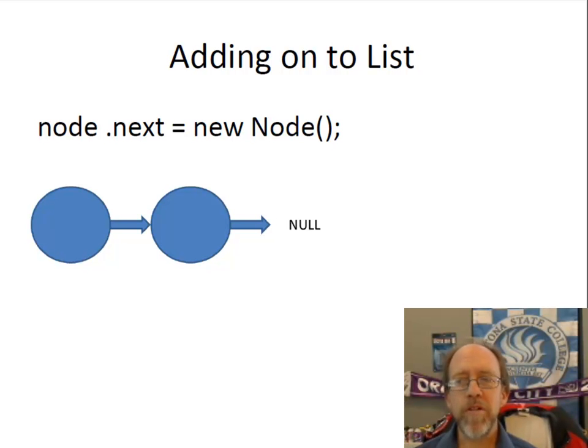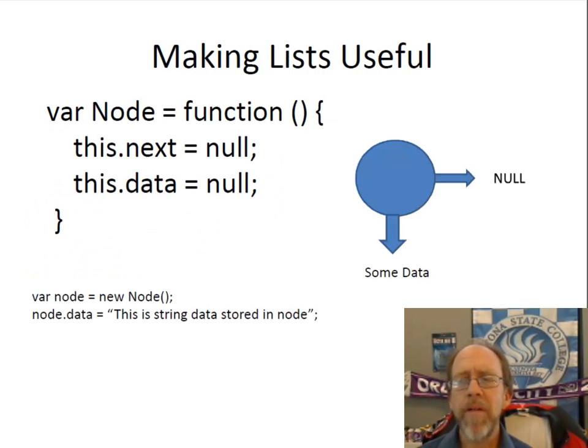Now this concept of the node is simple in that the head is the first element of the node, and the tail, which would be the last element of the node, is defined by the fact that it points to nothing, or it points to null. So any node in a list that points to null would be the tail.